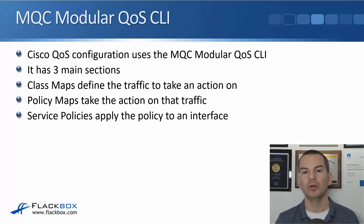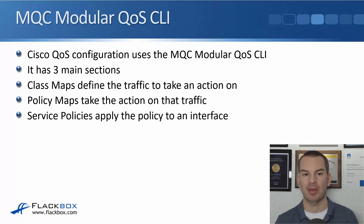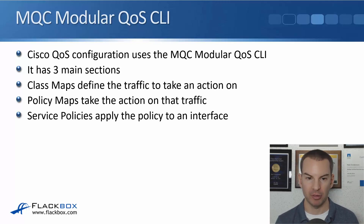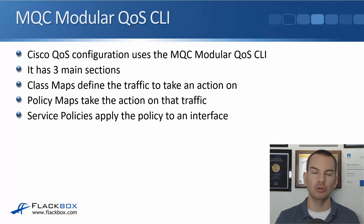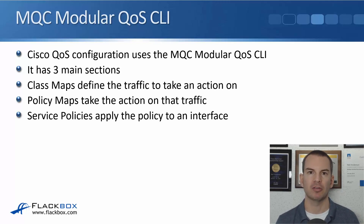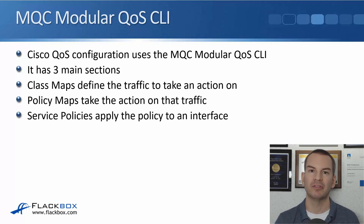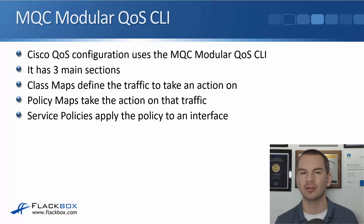Configuration uses the MQC, which is the modular QoS command line interface. The MQC is built with three main sections. First, the class map, which defines the traffic to take an action on. Then there is the policy map, which specifies the action to take on that traffic. And finally, the service policy, where you apply the policy map to an interface. When the MQC first came out it was just used for QoS, but Cisco has used this framework for many other configurations as well — for example, security policies on a Cisco firewall use the same framework. So once you learn it the first time, it makes it easy to learn new technologies that use the same framework.